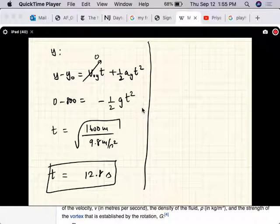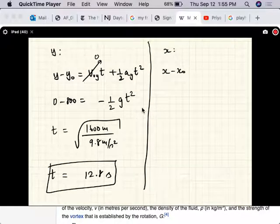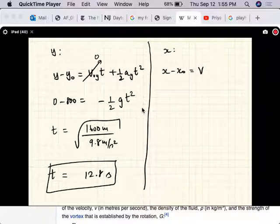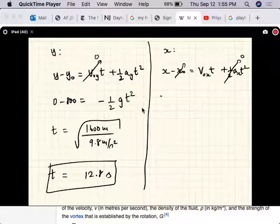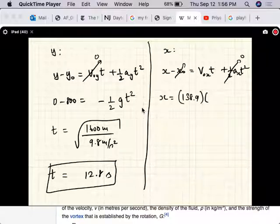And now we can calculate the x component of the motion or the horizontal distance it travels. X component of the acceleration is 0, the final x position is 138.9 into 12.8 meters per second.